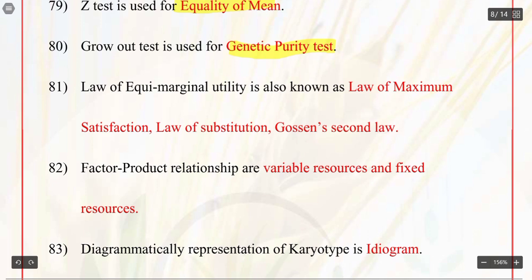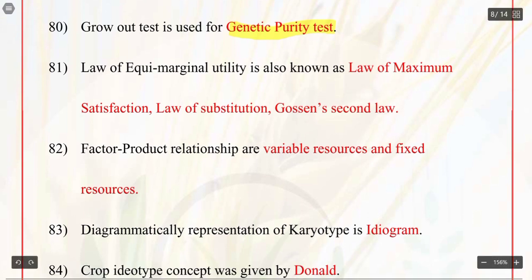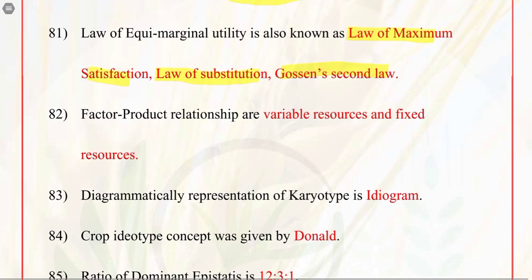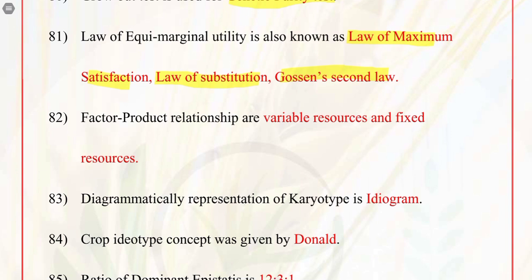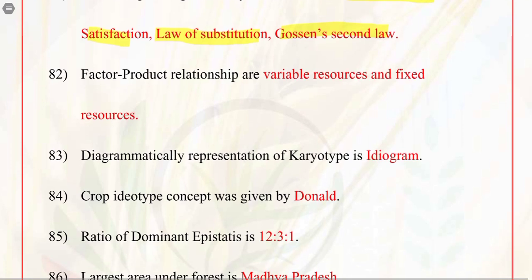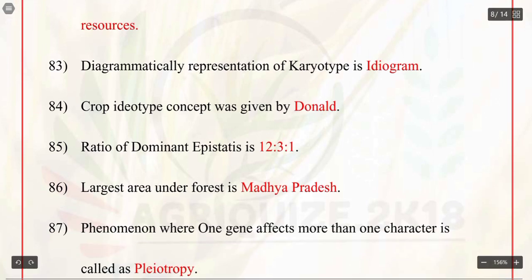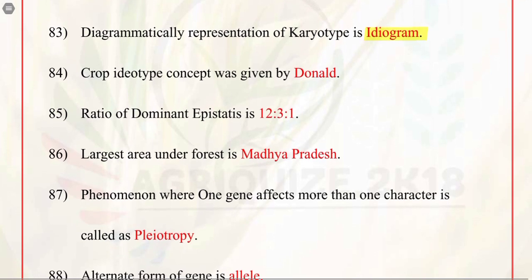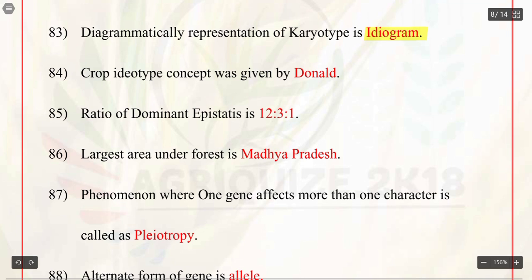Q81. Law of equimarginal utility is also known as law of maximum satisfaction, or law of substitution, or Gossen's second law. Q82. Factor-product relationship involves variable resources and fixed resources. Q83. Diagrammatic representation of karyotype is ideogram.